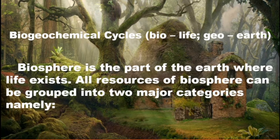On earth there are two kinds of things — non-living things and living things. Both are important. Living things always depend on non-living things, but non-living things do not depend on living things. So if living things want to survive in this world, they must depend on non-living things, and non-living things must be maintained.